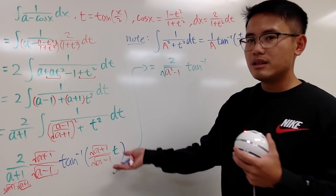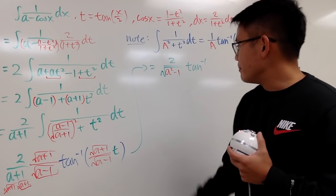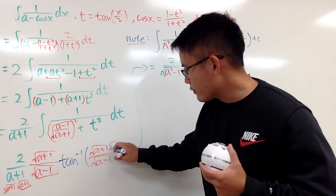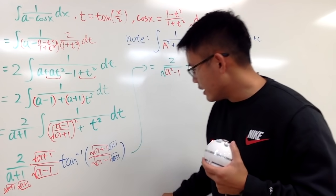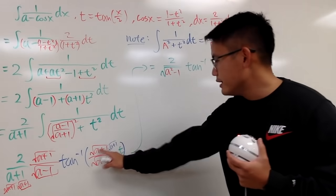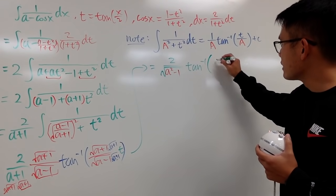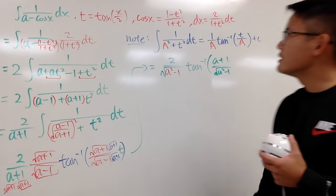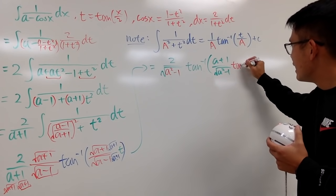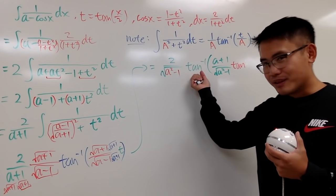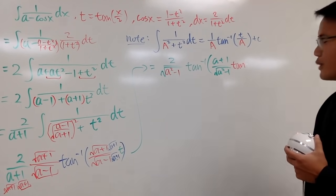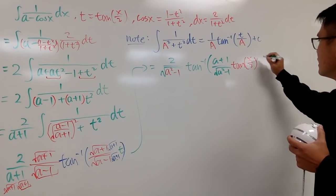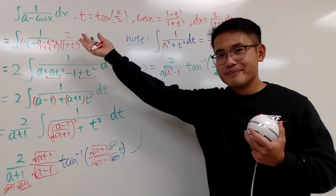If you don't like the square root form, you can rationalize the numerator or denominator. I'll multiply top and bottom by √(a+1), giving (a+1) on top over √(a² - 1) in the denominator. Now substituting back, t = tan(x/2), so arctan(t · √(a+1)/√(a-1)) becomes arctan(tan(x/2) · √(a+1)/√(a-1)). Note there's a constant multiple so you can't cancel the tan and arctan.